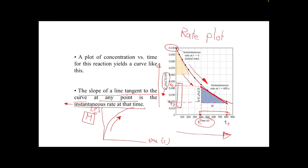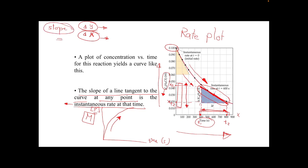To summarize the graphical method: we identify the point where we want to measure the rate, draw a tangent line to the curve at that point using a ruler, take two points on the tangent line, find their corresponding values on the x-axis and y-axis, and then calculate the slope — change in y divided by change in x. That slope equals the rate at that point.